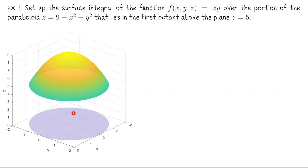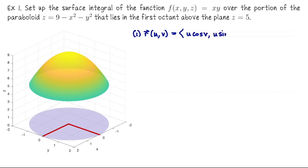Here I've sketched the paraboloid over the plane Z = 5, but we're only interested in the first octant portion of this surface. In the XY plane sketched at the bottom, we see the shadow of the portion we're interested in. It makes sense to parametrize this surface using polar coordinates. So let R(U, V) have X = U cos V, Y = U sin V, and since X² + Y² = U², the Z coordinate becomes 9 − U².